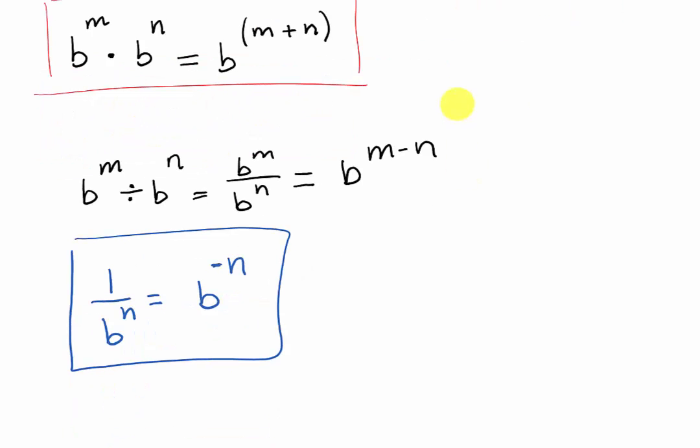If we divide the exponent with the same base, you subtract the exponent. Here we have b to the m divided by b to the n. You can rewrite this as a fraction, b to the m over b to the n, so therefore b to the m minus n.